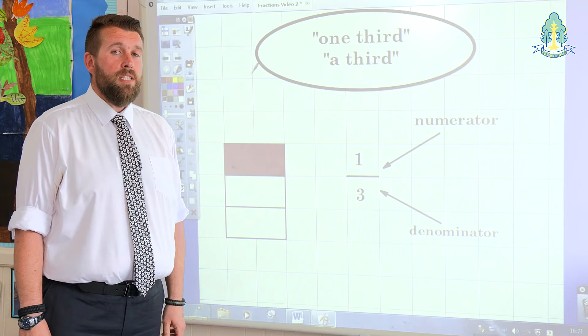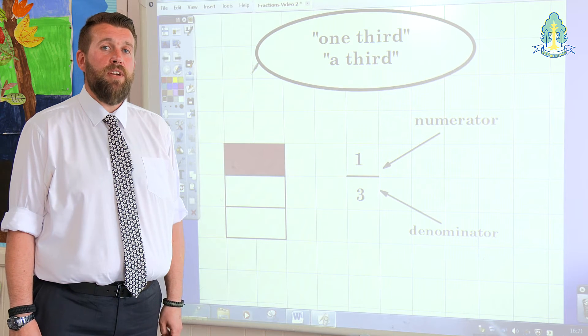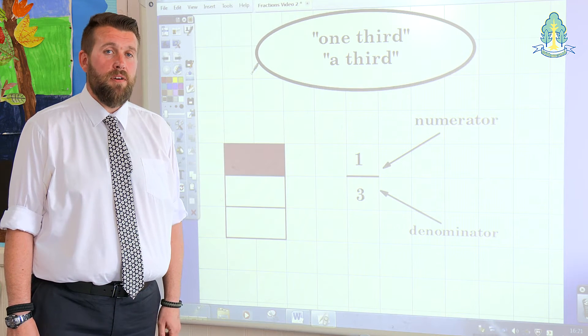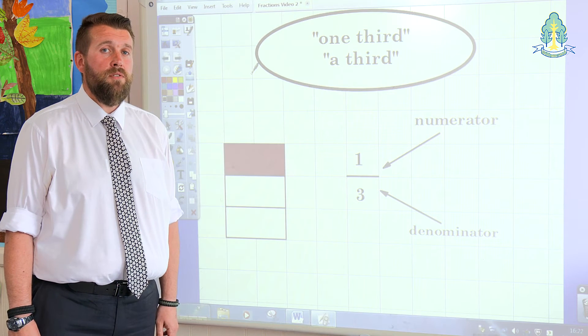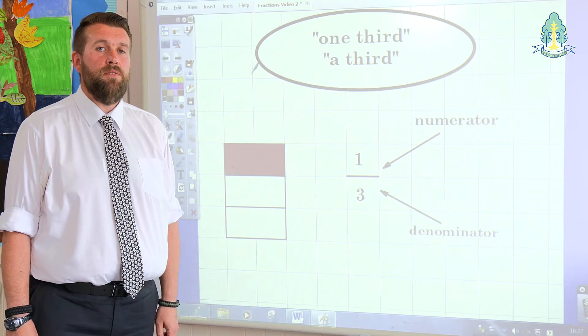And this can be confusing for children. So it's best to explain it in terms of winning a race, coming third or fourth or fifth, etc. So for instance, if you had 2 over 5, you had 2 fifths.